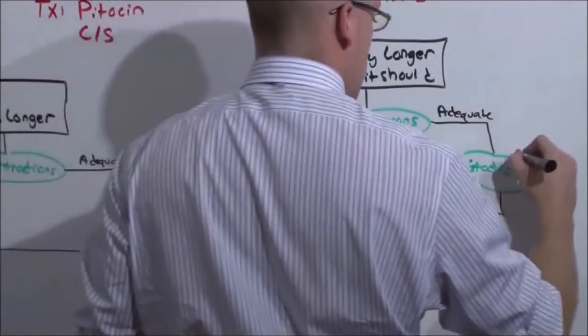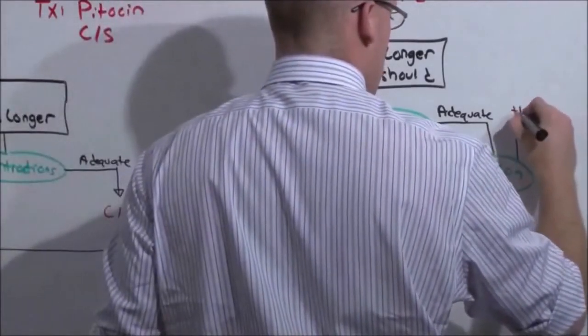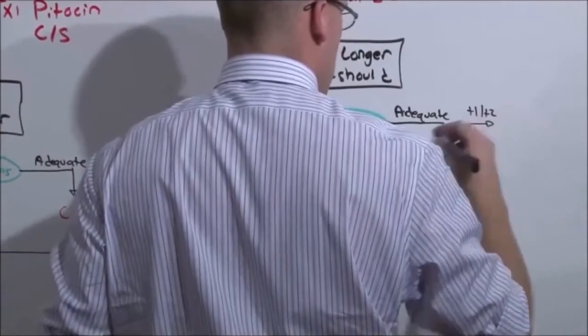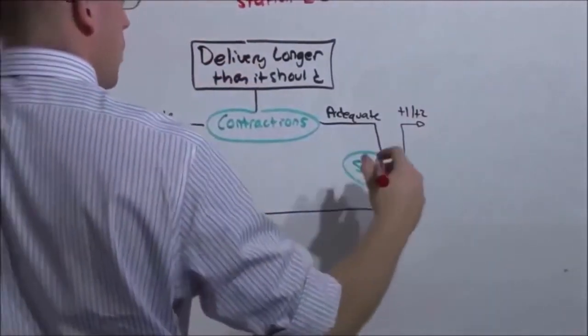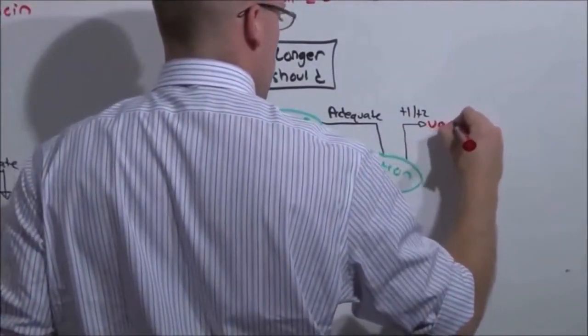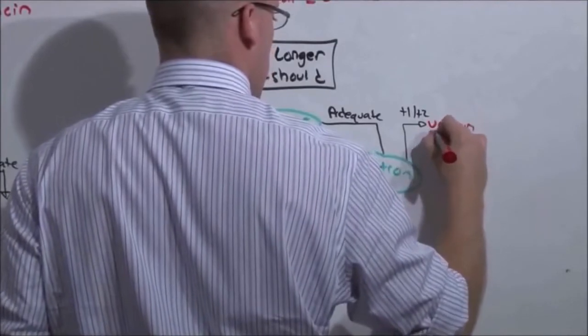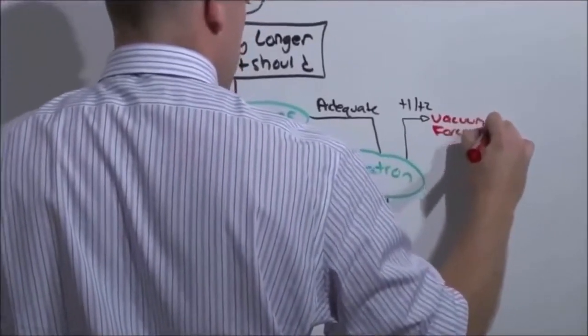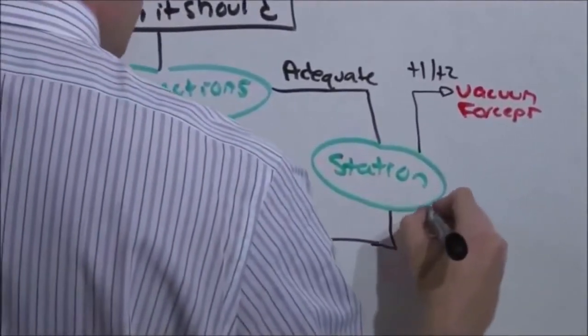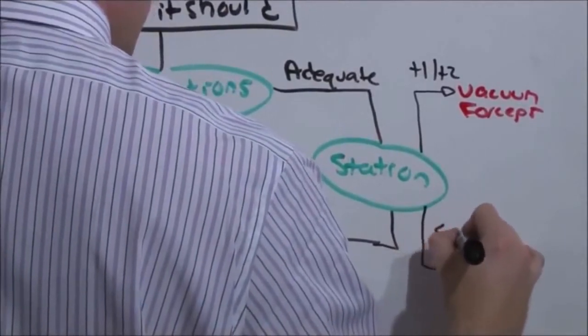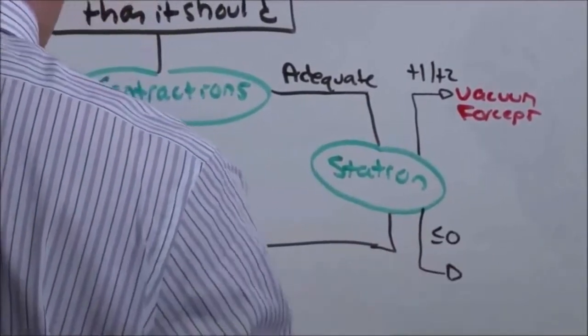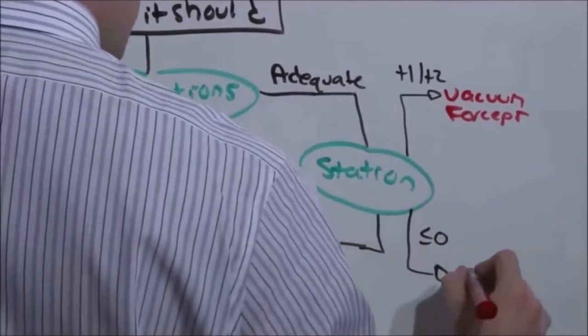But here's how this one's going to change a little bit. If there is a failure of Pitocin or the contractions were originally adequate, now you know baby needs to come out. But you have to ask a question. What is the fetal station? Because if it is near the vaginal opening, you're going to still do an OB operation, but you're going to use either a vacuum or forceps. If it is far from the vaginal opening, you're going to do the OB operation. We most commonly do C-section.